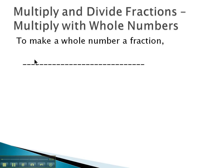We can easily make a whole number a fraction by simply putting it over 1. For example, the number 7 quickly becomes a fraction when we put 7 over 1. And this works because 7 divided by 1 is simply 7, the whole number.